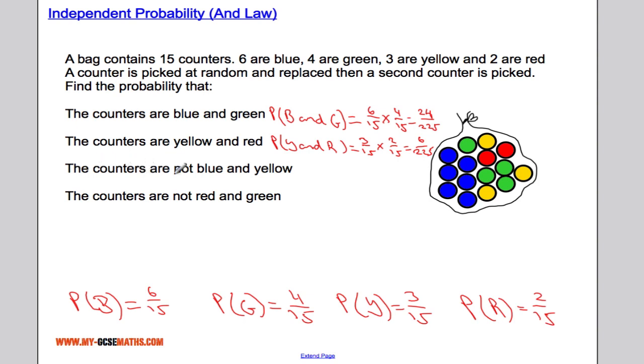For the probability that the counters are not blue and yellow, we calculate 1 minus the probability that they are blue and yellow. That's 1 minus 6 out of 15 multiplied by 3 out of 15, which equals 1 minus 18 out of 225. Checking on a calculator, we get 207 out of 225.